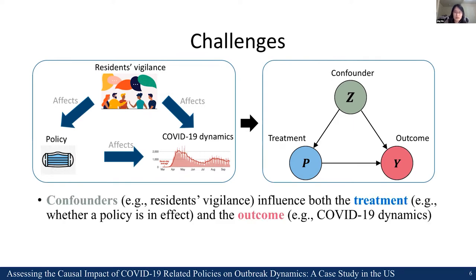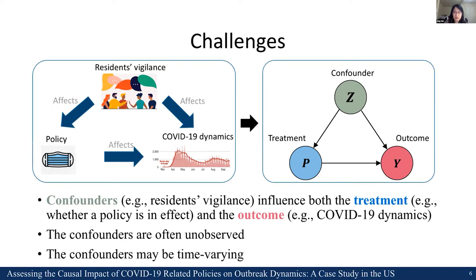One of the main challenges in causal effect estimation is the existence of hidden confounders. Confounders are variables which causally influence both treatment and outcome. For example, if a county where residents have a high awareness towards COVID-19, the government may issue social distancing policies at a very early stage, but residents there also tend to be very alert and will have a very low infection risk even without the policies. Here, the resident awareness is a confounder which brings correlations between the treatment and outcome. An unbiased causal effect estimation needs to control for all confounders. However, confounders are often unobserved and time-varying, so they are often very hard to control.